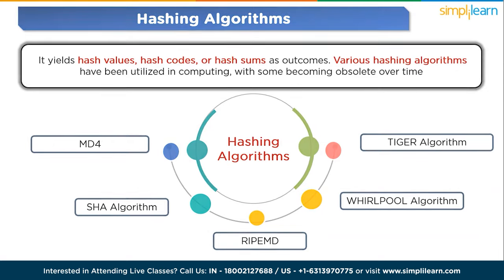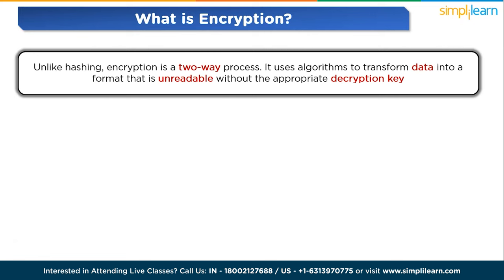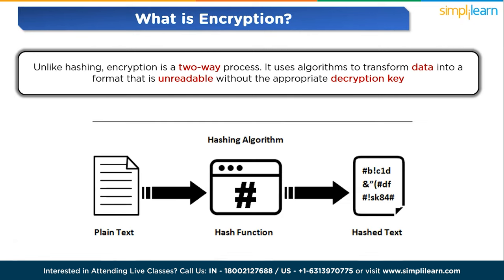Now we will move to encryption. Unlike hashing, encryption is a two-way process. It uses algorithms to transform data into a format that is unreadable without the appropriate decryption key. The main goal of encryption is to protect the confidentiality of data, ensuring that unauthorized parties can't access or understand it.